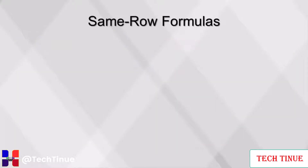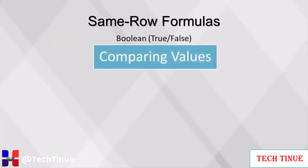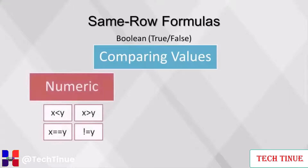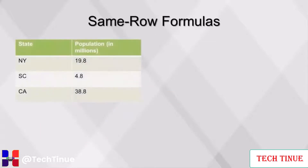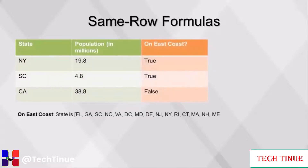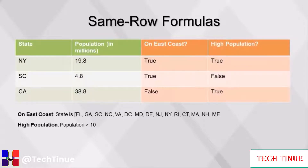With formulas, we can also compare values of two different fields to create a boolean variable. A boolean variable is typically used to capture true/false values. To create a boolean variable, a logical statement or condition can be used in a formula. This logical statement can compare two values of the same type: numeric values, strings, and dates. This table depicts the population of states. We can use a formula to create a column that displays whether the state is on the east coast, and also create a column to display whether the state has a high population.